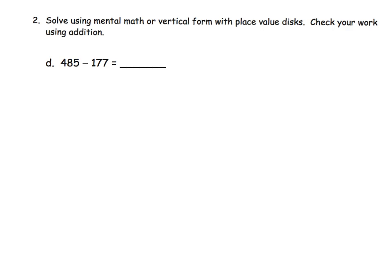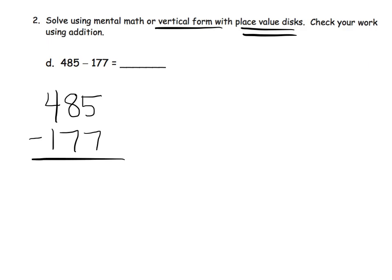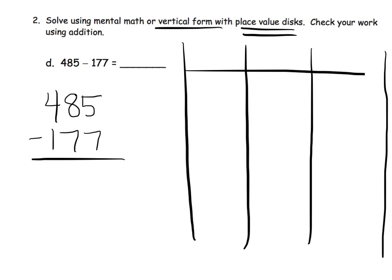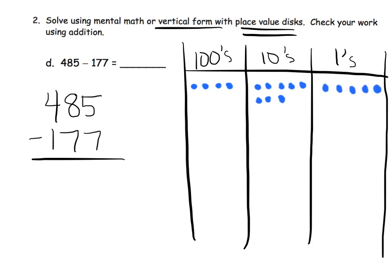Parents and teachers, I'm going to do this one a little quicker, so you may have to pause and rewind a few times. We are going to solve 485 minus 177 using the vertical form and place value disks. I'll begin by writing it in vertical form. Now let's do the place value chart — there's our hundreds, tens, and ones. We're going to model 485: 4 hundreds, 8 in the tens column, and 5 in the ones column. There's my 485.